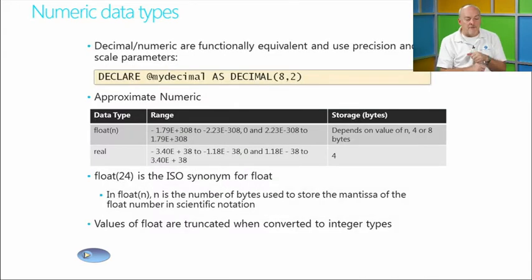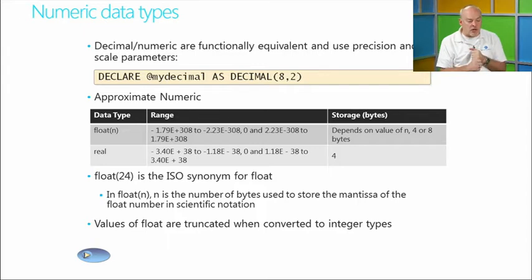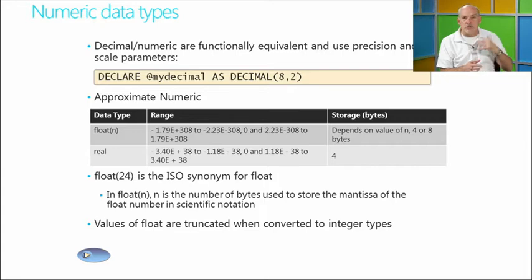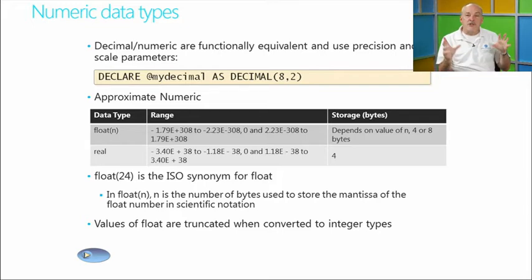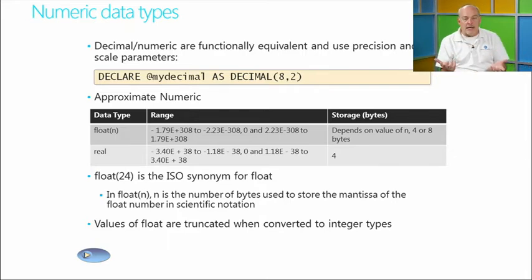For example, you can declare a variable as Decimal(8, 2), defining the number of decimal points and precision. When declaring these items, you need to take into consideration what kind of content will be stored. Approximate numerics include Float (4 or 8 bytes) and Real (4 bytes), so understand storage size and the type of data you'll store.